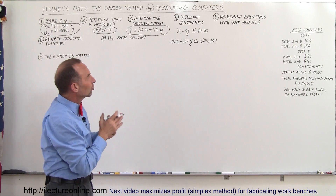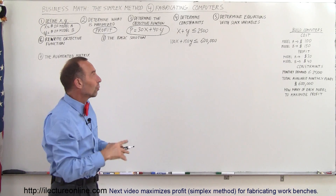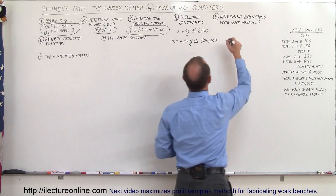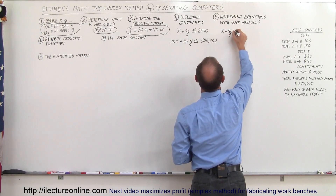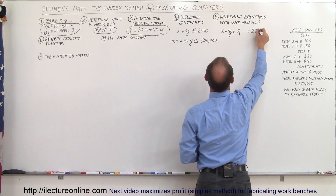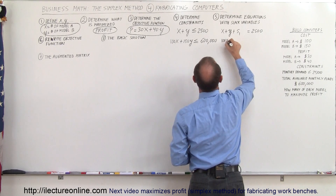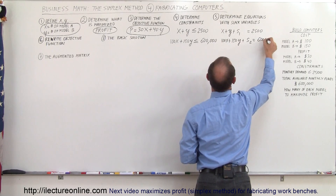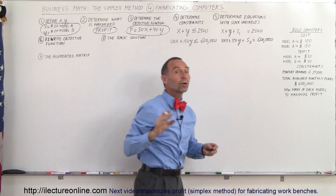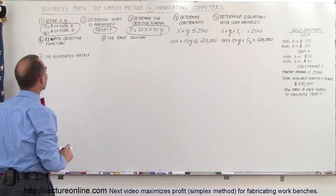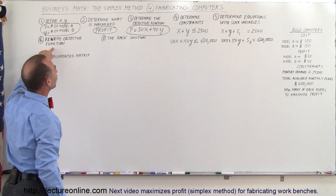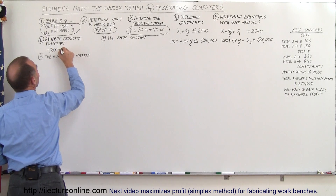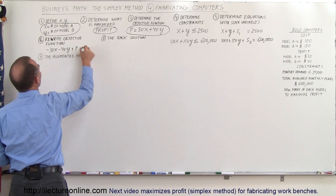Now we write those constraints as equations using slack variables. Adding a slack variable turns the inequality into an equation: X plus Y plus S1 equals 2,500, and 100X plus 150Y plus S2 equals 600,000. We also rewrite the objective function with everything on one side: minus 30X minus 40Y plus P equals 0.